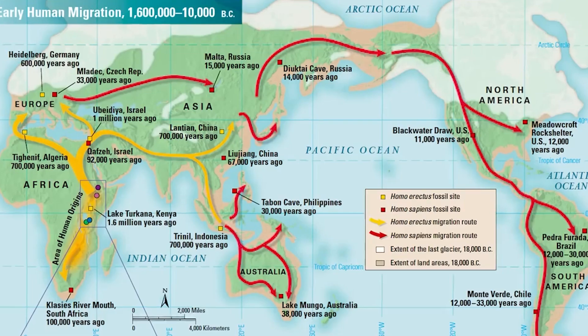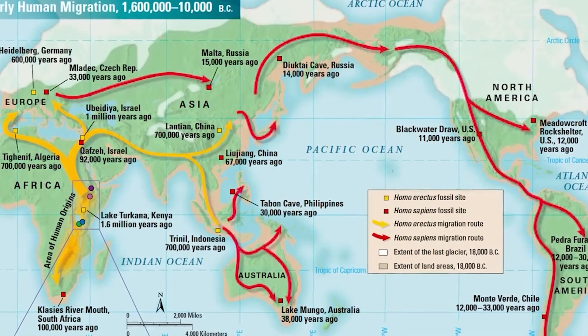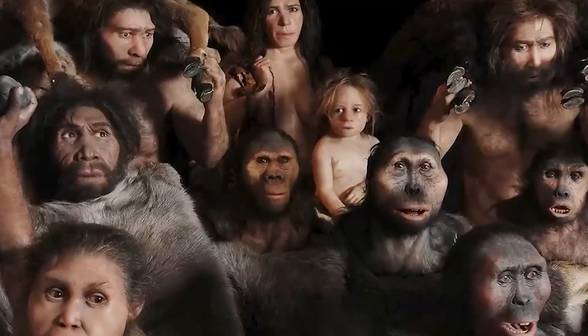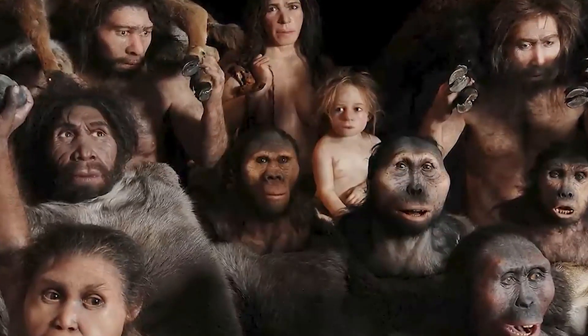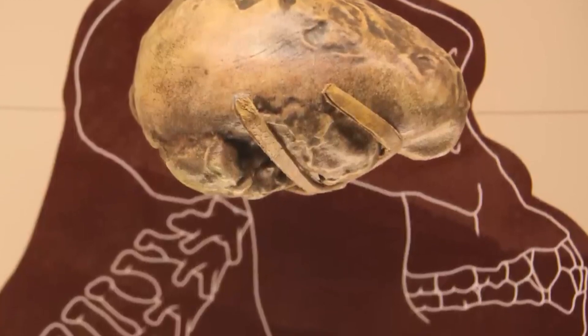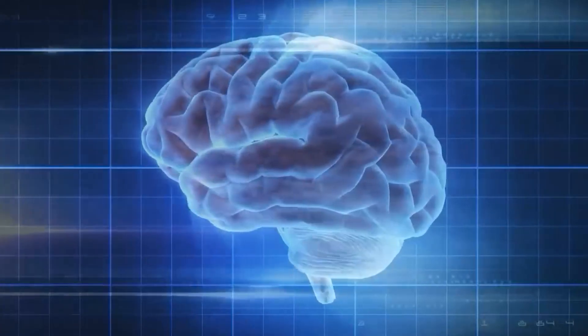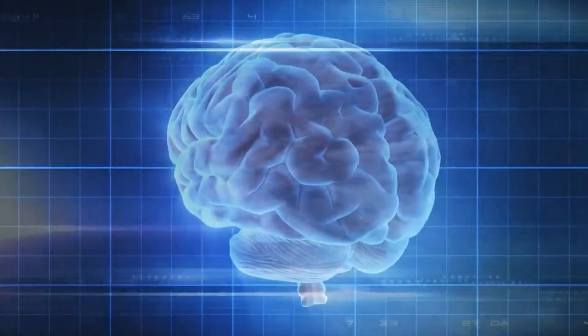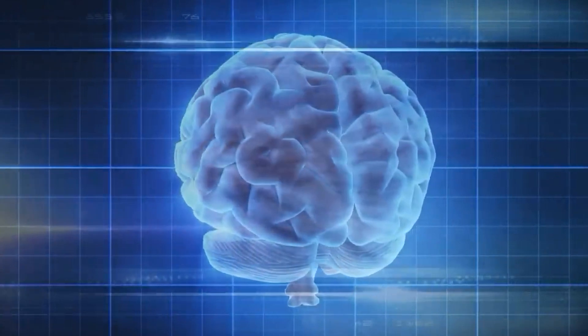Three: evolution theory does not say that organisms only change through natural selection during the process of evolution. Random genetic changes such as mutations also play an important role in the evolution process.